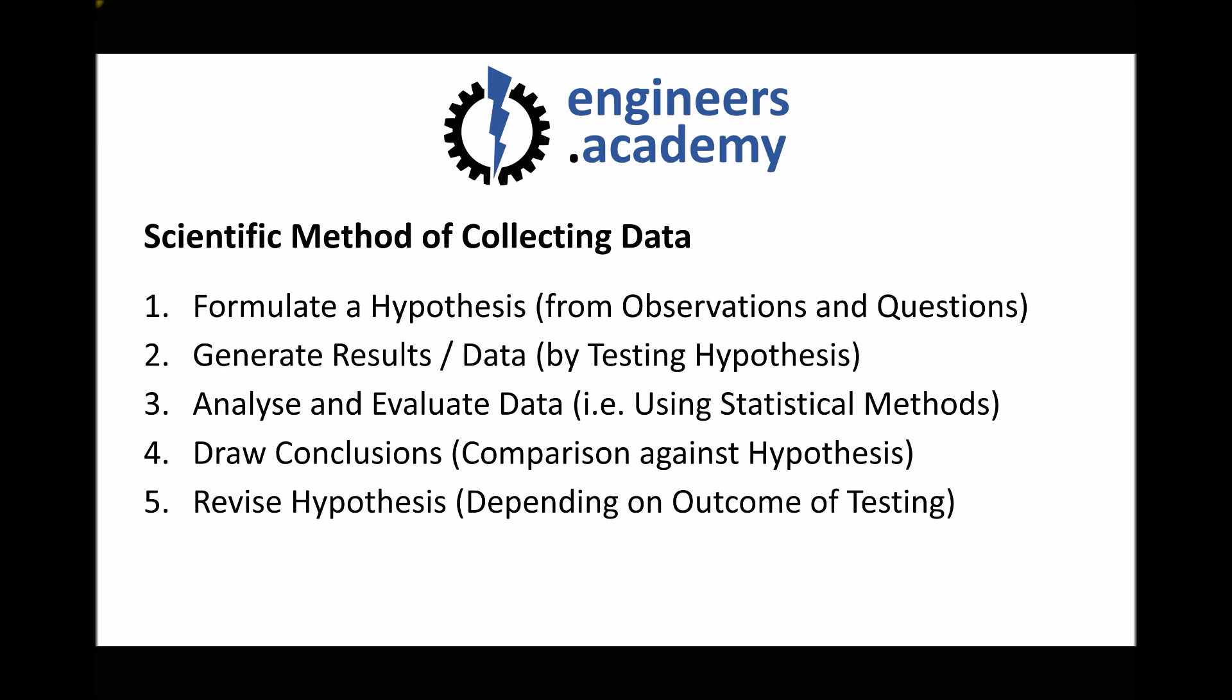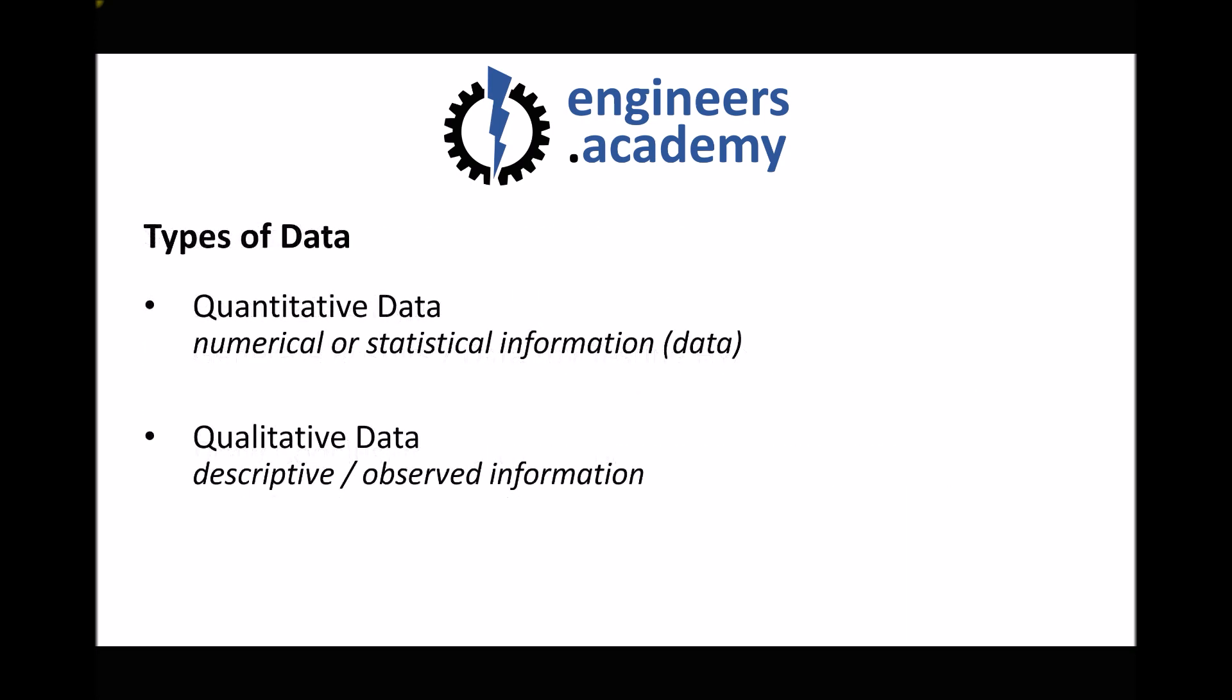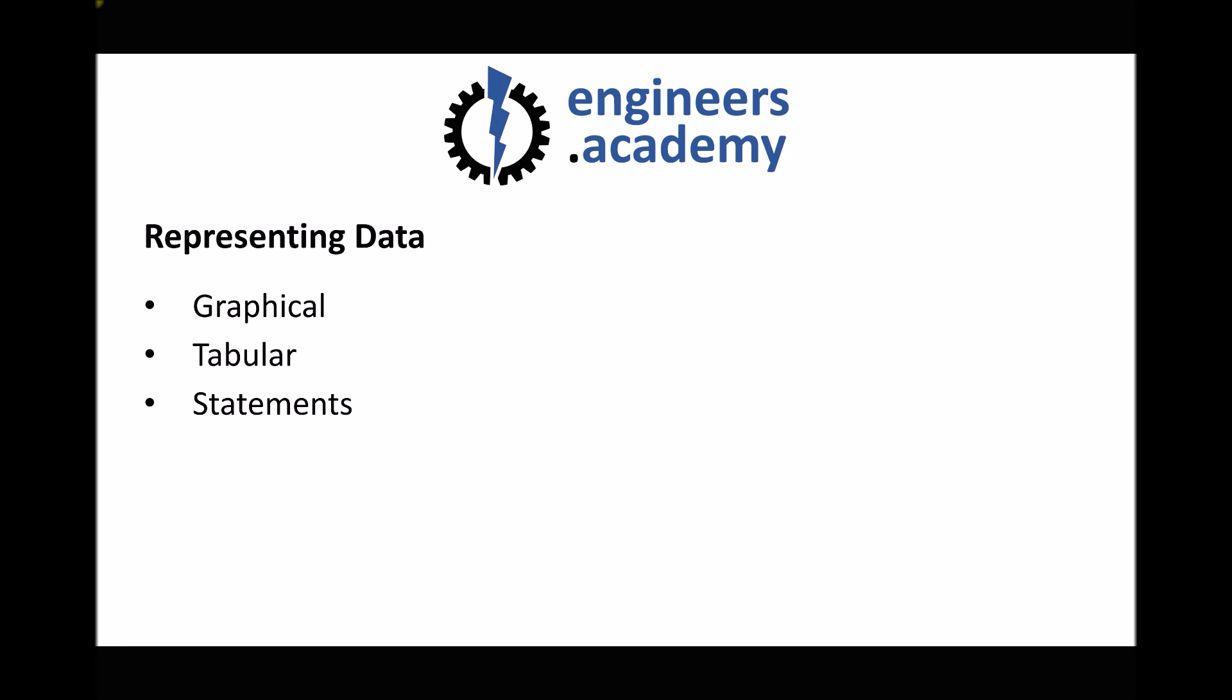To conclude, there is a scientific method for collecting data based around formulating a hypothesis, generating results, analyzing those results, drawing conclusions, and where necessary, revising the hypothesis to conduct a supplementary test. We have two different types of data: quantitative, which is numbers-driven, and qualitative, which is descriptive or observed. And we have three key ways of representing data: graphical, tabular, and written statements. I hope you found this video useful. Thanks for listening. Bye-bye.